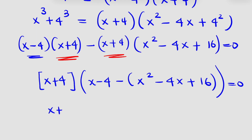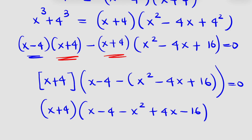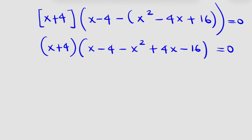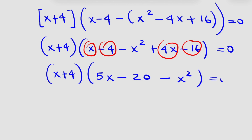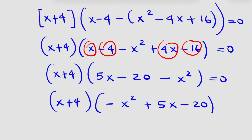So I have (x plus 4) into (x minus 4 minus x squared plus 4x minus 16) is equal to 0. Tidying this up, x and 4x give us 5x; negative 4 minus 16 gives us minus 20; and we are left with minus x squared. So: (x plus 4)(negative x squared plus 5x minus 20) is equal to 0.